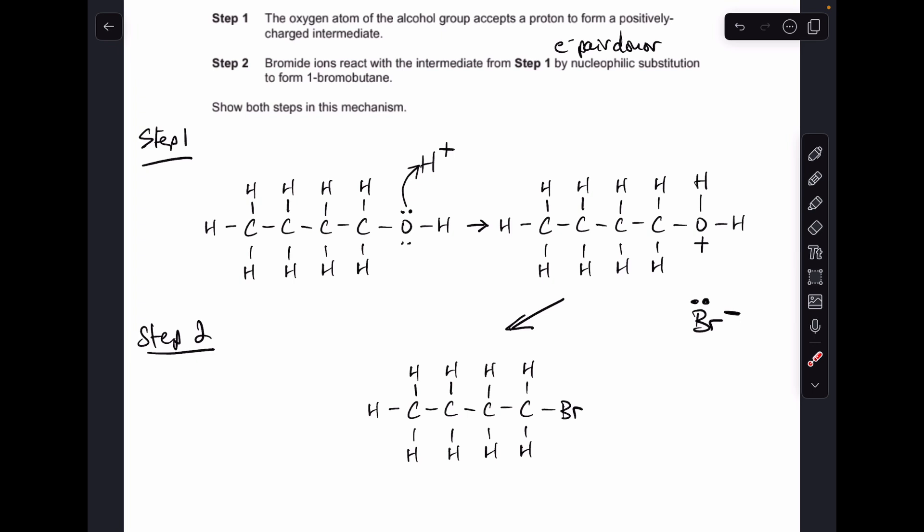So I've already drawn up the organic product just to help me explain what's going to happen in step 2. We can see that this bond's formed between the end carbon of the intermediate and the bromine.